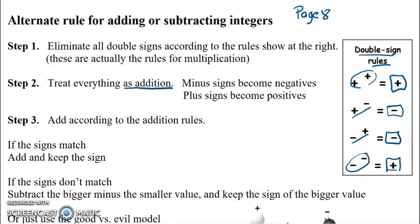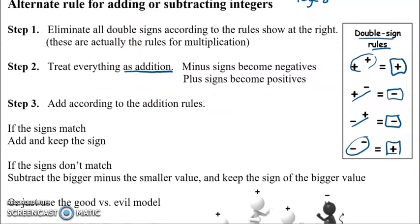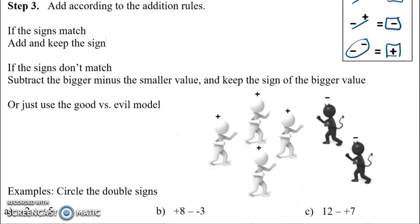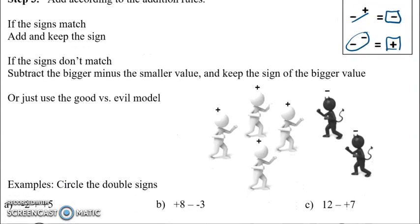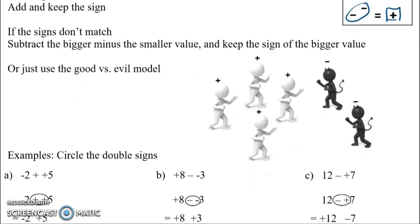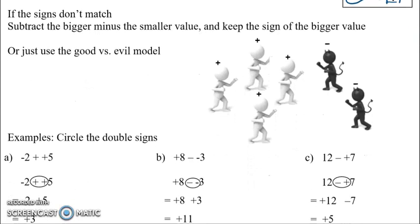According to the addition rules, which says if the signs match, we add and keep the signs, and if the signs are different, we subtract and take the sign of the bigger. Or you can use this other method that I think is a lot more effective to simply say we got good guys fighting bad guys, and the bigger group wins, and you just subtract the two numbers to figure out how much they win by.